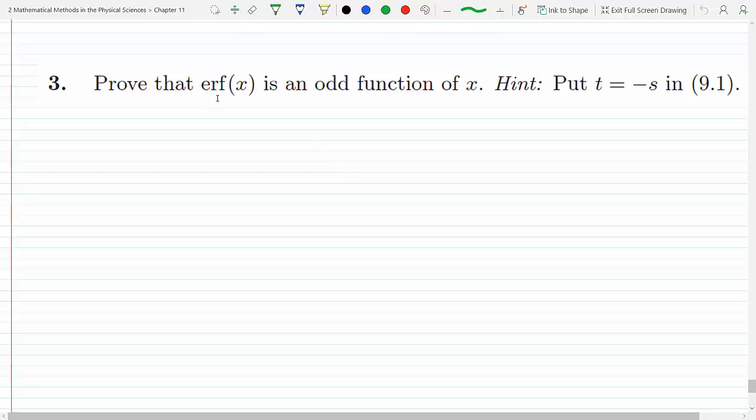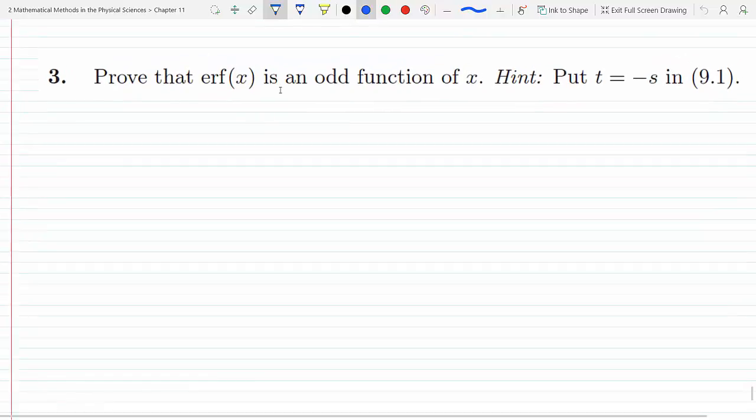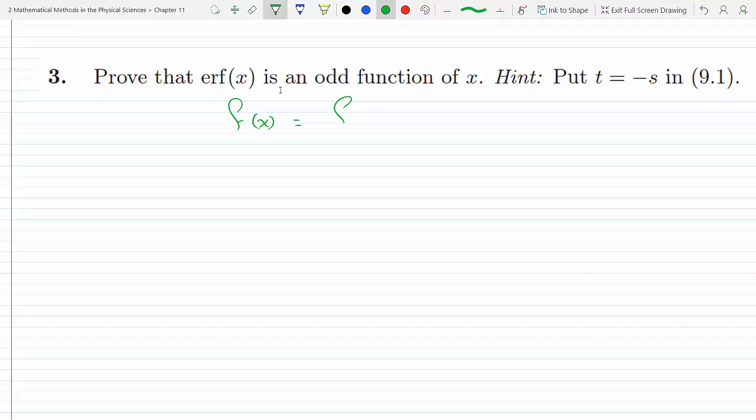Prove that the error function of x is an odd function of x. So an odd function, to elaborate here, is when f of x in general is equal to minus f of minus x. An example of that would be f of x equal x cubed.